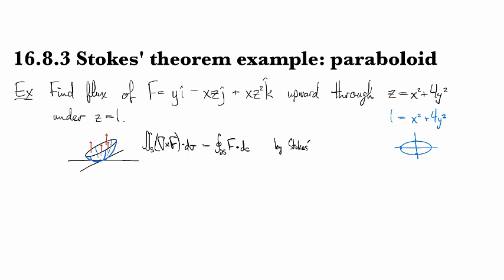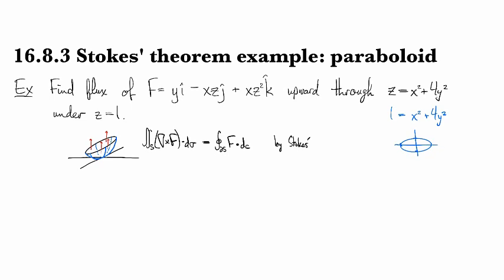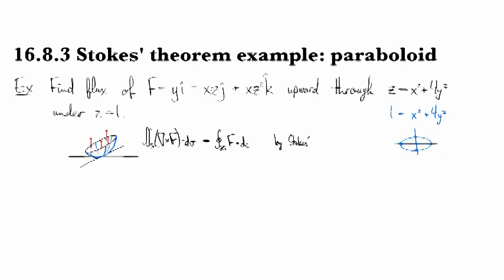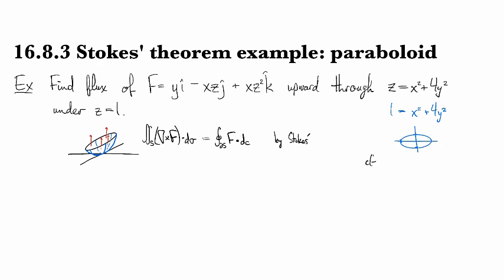And so now, to go to the next step, we need to have a parametrization for this path, this ellipse that we found over here. So I'm going to take the usual, because I have no imagination—and actually because anything else makes it just more complicated—cosine t, and then we have to multiply the y-coordinate by one-half.